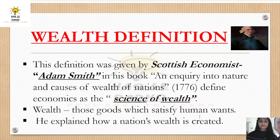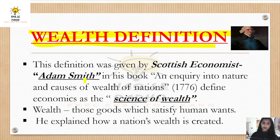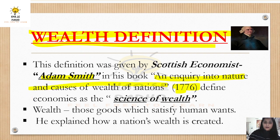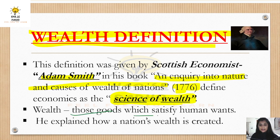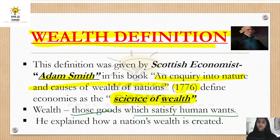Now we will read the four main definitions that well-known economists have given us. The first definition is the wealth definition, given by the father of economics, Adam Smith. He gave this definition in 1776 through his book An Inquiry into the Nature and Causes of the Wealth of Nations. What is economics? The science of wealth — to study, generate, and create wealth. Wealth refers to those goods which can satisfy human wants. When you create goods and services, wealth is generated in your country.